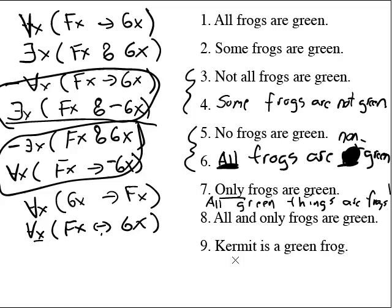What about Kermit is a green frog? This sentence, of course, is a singular sentence. It is about a named individual. Since it's about a named individual, we are not going to use quantifiers. Instead, we're going to use the name. What are we saying about Kermit? He's a green frog. So what this amounts to is Kermit is green, capital G, lowercase k, ampersand. Kermit is a frog.